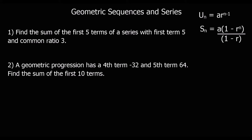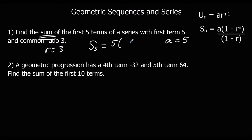But this is the final formula we're going to use most of the time. Find the sum of the first 5 terms of a series with first term a = 5 and r = 3. So this time we're going to use the sum formula. S5 equals a·(1 - r^n) / (1 - r), which is 5·(1 - 3^5) / (1 - 3). Typing that into the calculator gives us 605. So the sum of the first 5 terms is 605.